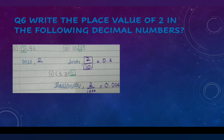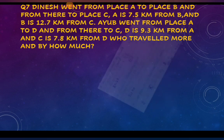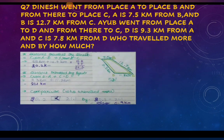Question number 6: Dinesh went from place A to place B, and from there to place C. A is 7.5 km from B, and B is 12.7 km from C. Dinesh went from place A to D and from there to C. D is 9.3 km from A, and C is 7.8 km from D. Who traveled more and by how much?